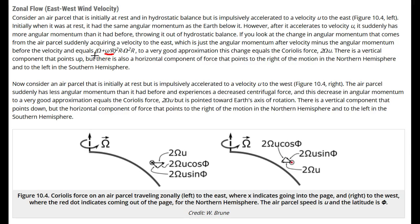To find the total angular acceleration that the moving air parcel has, we need to square the angular momentum of the air parcel, which is omega plus u divided by r, and then multiply it by r. We then subtract the Earth's acceleration, which is just omega squared r.